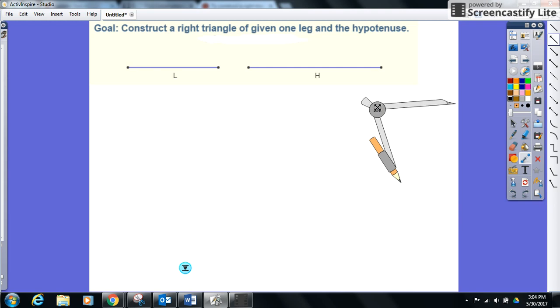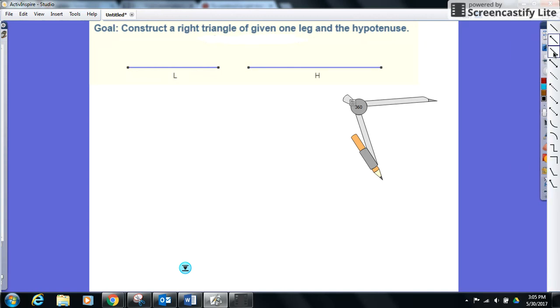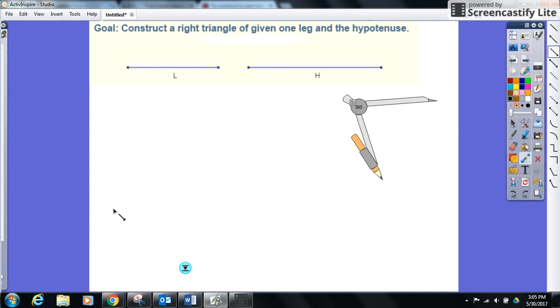This construction video will highlight how to construct a right triangle given one leg and the hypotenuse length. First step: what we want to do is with our straight edge make a decent size ray.